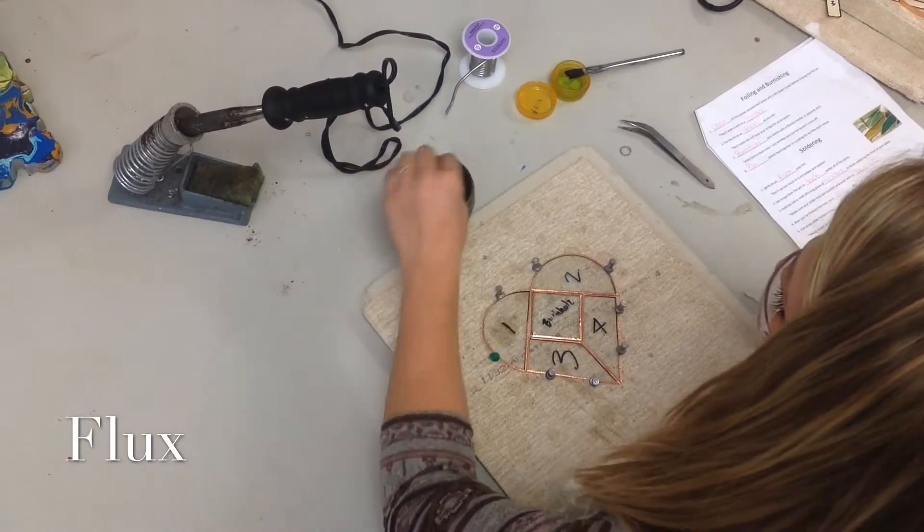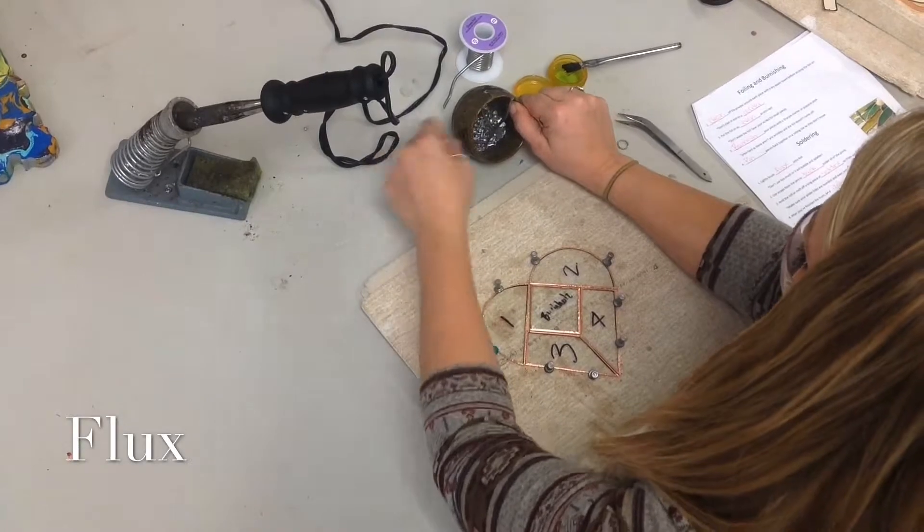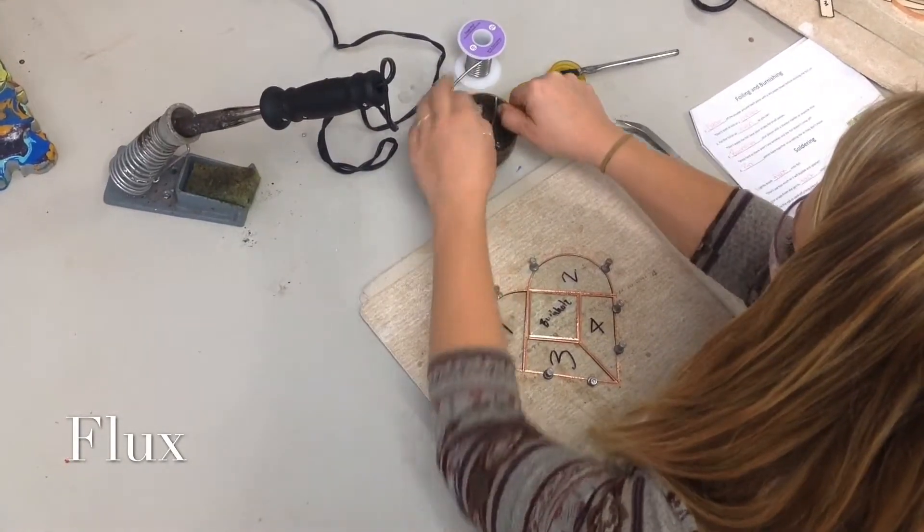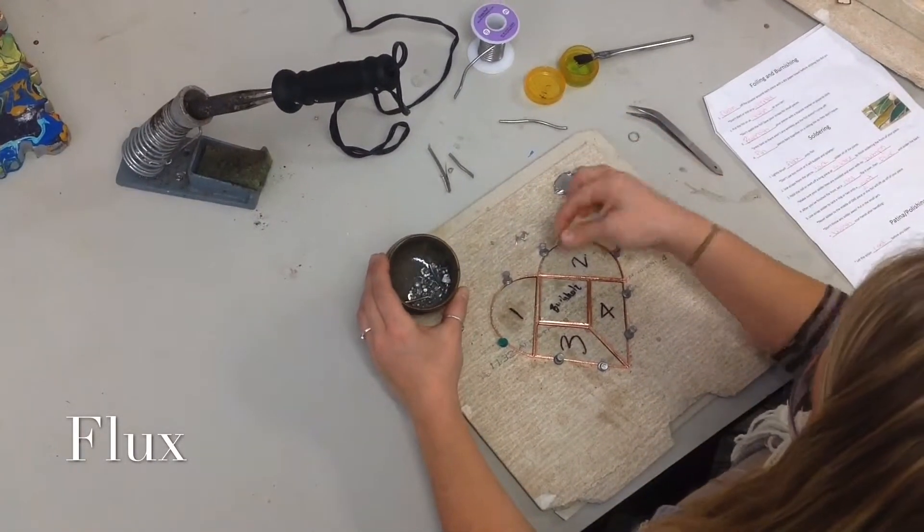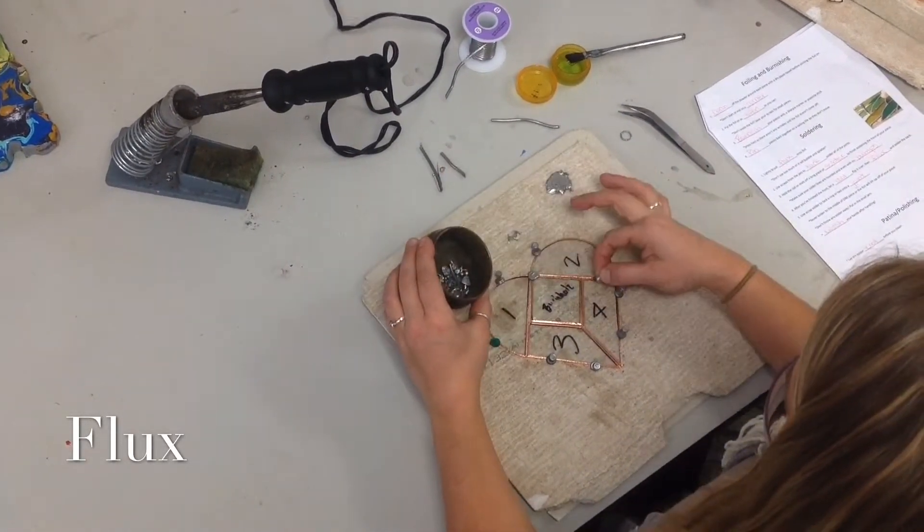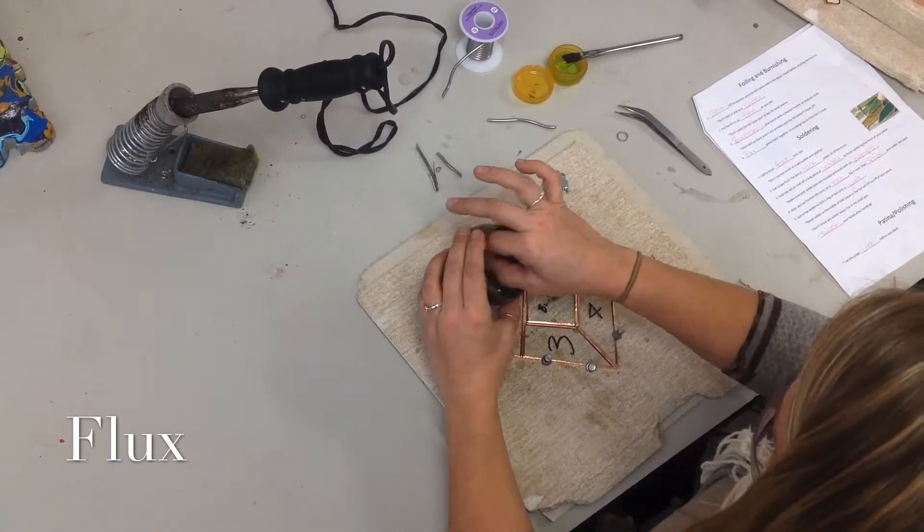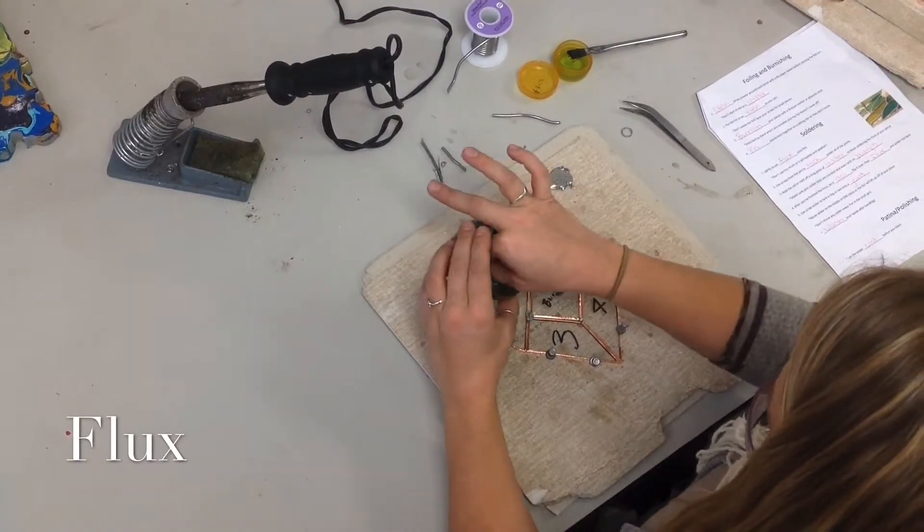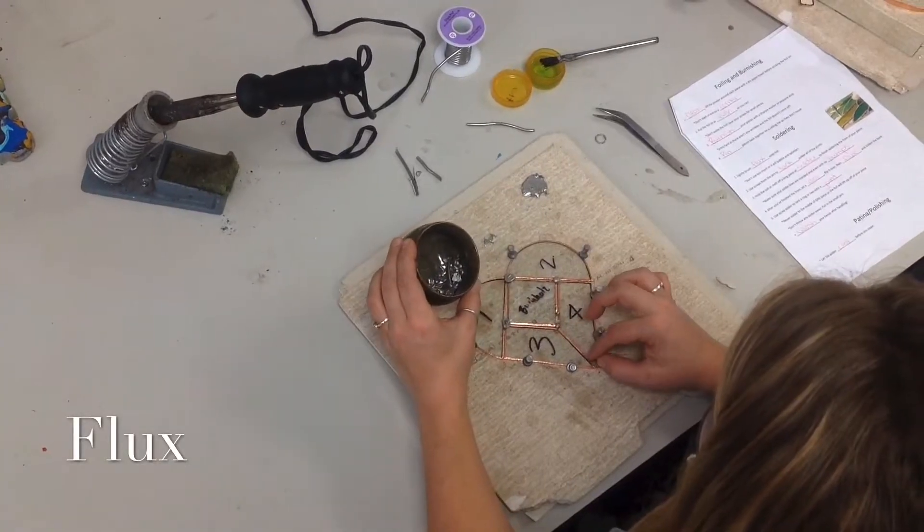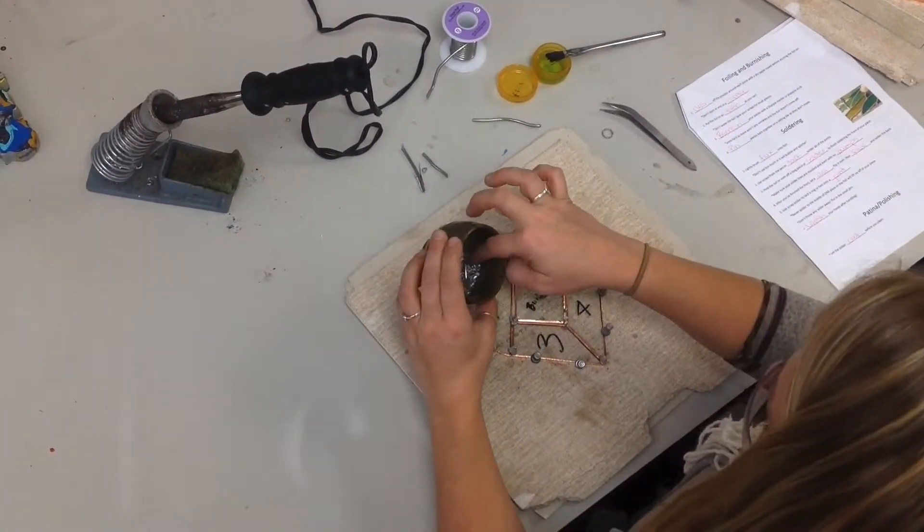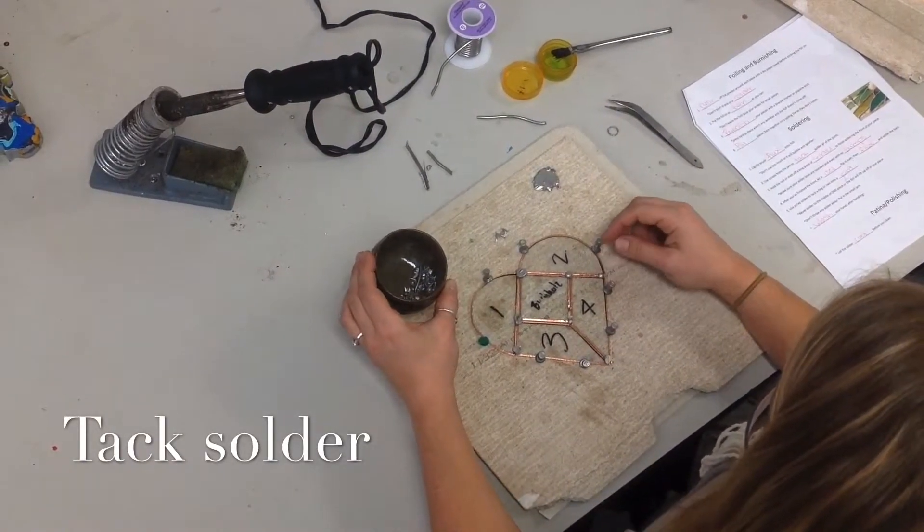Then we're going to use this scrap solder in these little jars. This is stuff that has dripped onto the boards. I'm going to set the scrap solder on all of my joints where the two pieces of glass meet. This is called tack soldering, where you're just tacking all of the joints together.